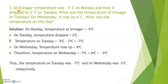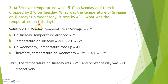Now Question 3. At Srinagar, the temperature was minus 5 degree Celsius on Monday, and then it dropped by 2 degree Celsius on Tuesday. What was the temperature on Tuesday? On Wednesday it rose by 4 degree Celsius. What was the temperature on Wednesday? You have to find the temperature on both days — Tuesday and Wednesday.